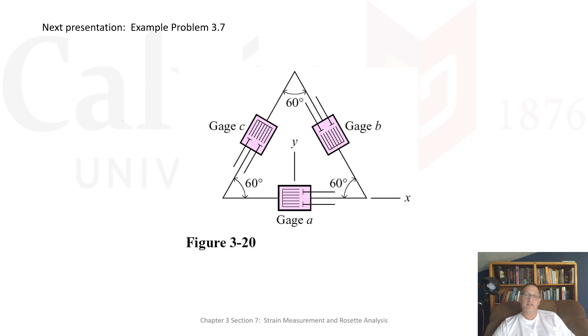So the next video, the next presentation is going to be example problem 3.7, where we're going to look at this particular arrangement of a 0, 60, 120, or a 0, 120, 240, depending on what you want to call it. But we'll look at that arrangement and we'll solve for the strains in the x, the y, and the shear strain. All right. Be well. See you in class.